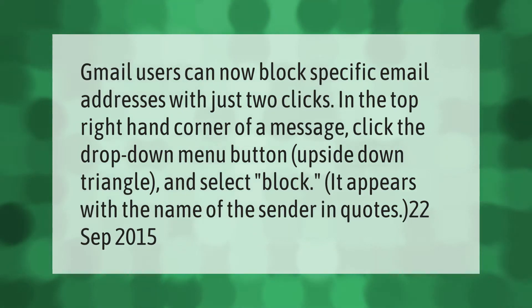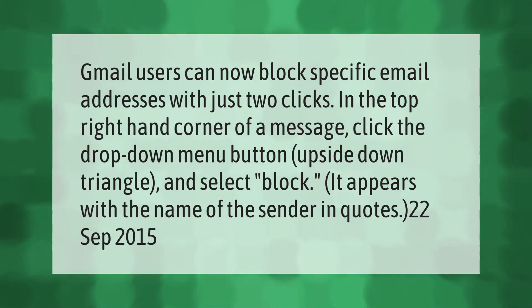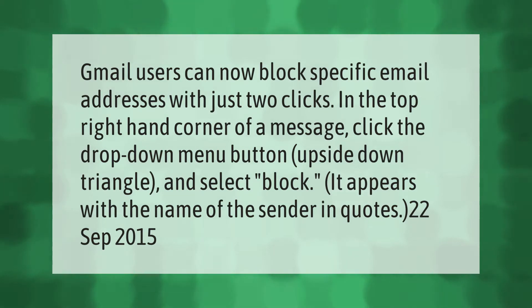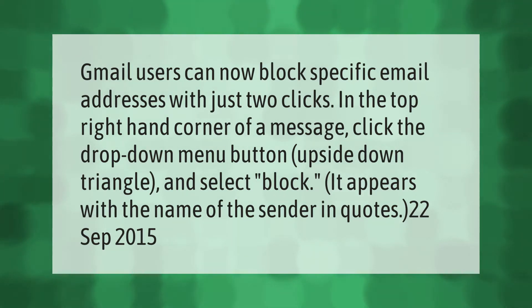Gmail users can now block specific email addresses with just two clicks. In the top right-hand corner of a message, click the drop-down menu button — the upside-down triangle — and select 'Block'. It appears with the name of the sender in quotes.